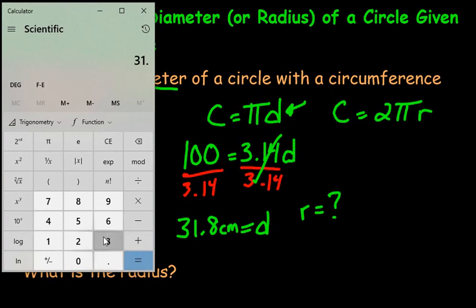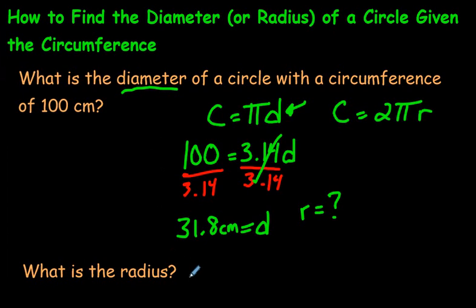31.8 divided by 2. And our radius would be 15.9. The radius is half of the diameter, 15.9 centimeters.